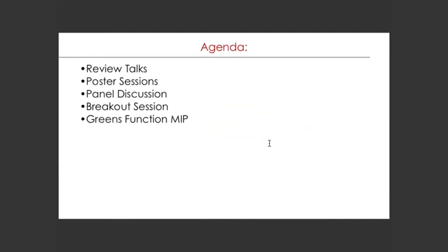You can find the agenda online. I'll walk you quickly through it to explain our philosophy of how we set the workshop together. The first one and a half days will be review talks only — we try to get everybody on, let's say, a similar page. We will have poster sessions, three in person, lightning talks from online participants, panel discussions, breakout discussions, and a Green's function model intercomparison overview on Friday.